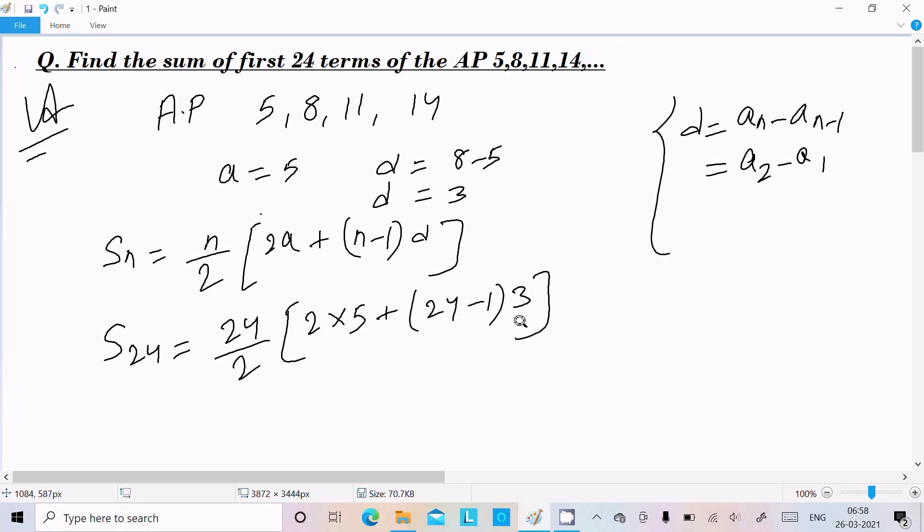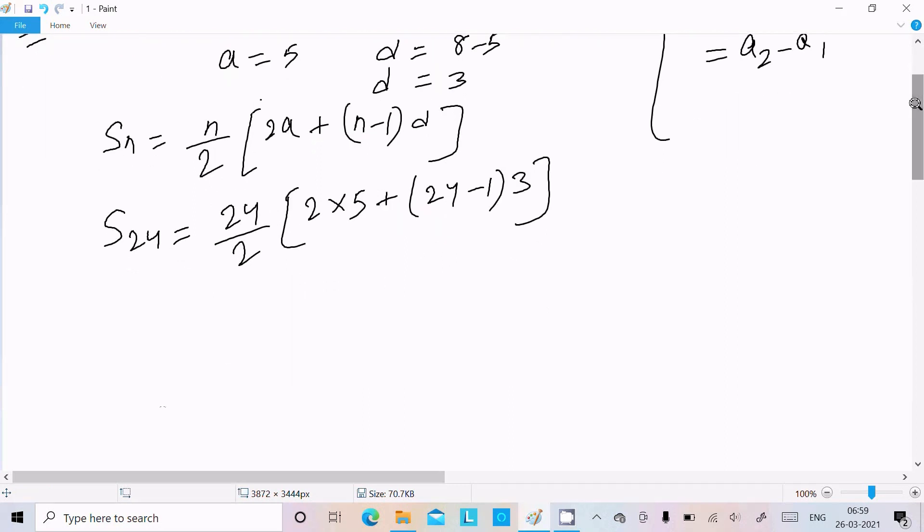So now I'll solve this. It cancels to 12. So we can write 12, then 2×5 equals 10, and 24 minus 1 equals 23, and 3. Next is 12...